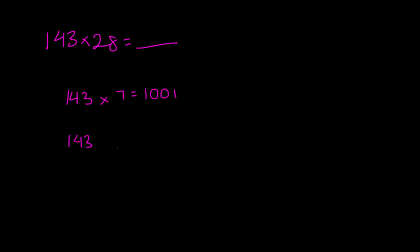So when they're asking you 143 times a multiple of 7 — I'm going to use a dot here just to avoid confusion between multiplication and x — so times 7x for some whole number x, it's really just asking you to find 1001 times x, because you multiply both sides of the equation by x.